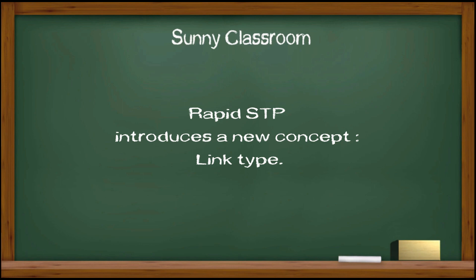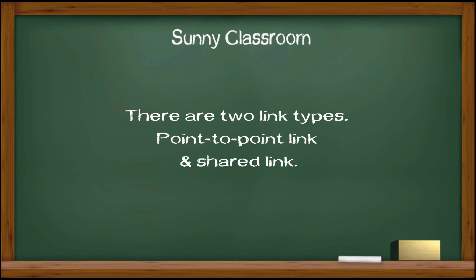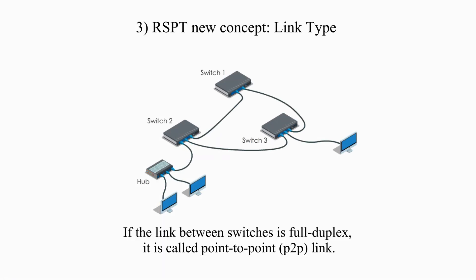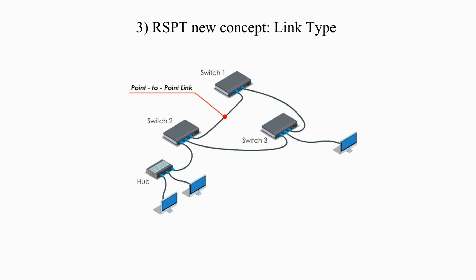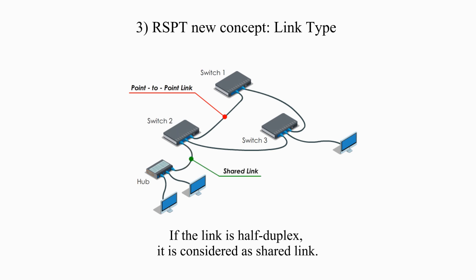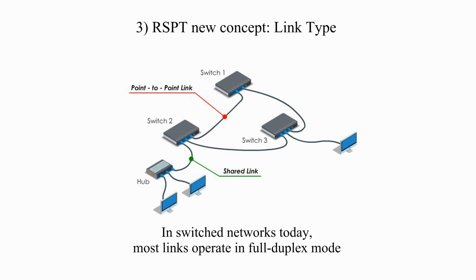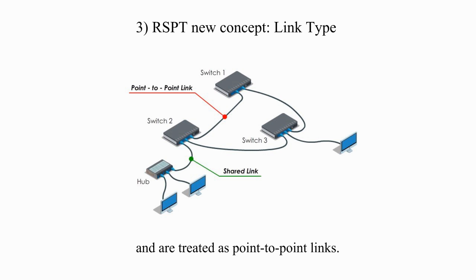Rapid Spanning Tree Protocol introduces a new concept: link type. There are two link types — point-to-point link and shared link. If the link between switches is full duplex, it is called a point-to-point link. If the link is half duplex, it is considered a shared link. Normally, the link connected to a hub would be a shared link. In switched networks today, most links operate in full duplex mode and are treated as point-to-point links.